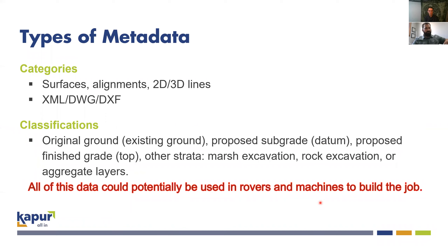The way that I view this data is as types of metadata. These should be familiar to all of you: surfaces, alignments, 2D and 3D lines. We want to use all this in our equipment out in the field. These file types generally will come as XMLs, DWGs, or DXF files. The surface classifications we see are existing ground, the proposed subgrade — otherwise referred to as the datum surface on top — and so on. All of this data could potentially be used in rovers and machines to build the job.